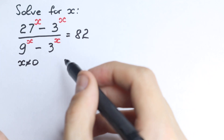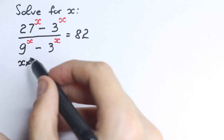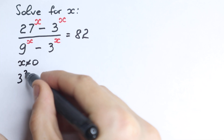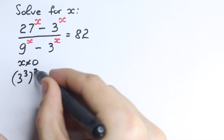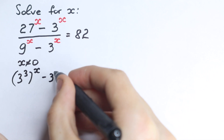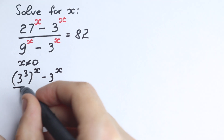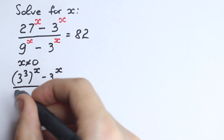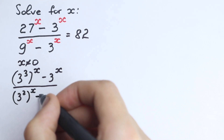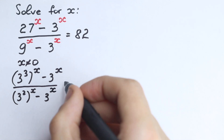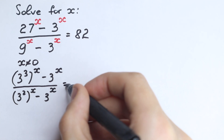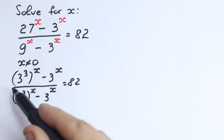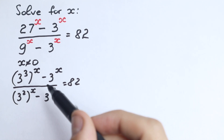Let's use this logic and rewrite the equation. Instead of 27 we write 3 cubed, so we have 3 cubed to the power x, minus 3 to the x, all over 3 squared to the power x, minus 3 to the power x, equal to 82. I just wrote 27 as 3 cubed and 9 as 3 squared.